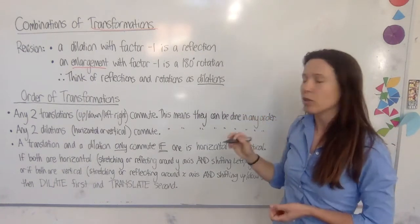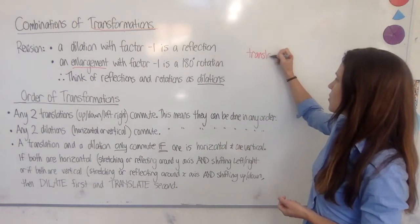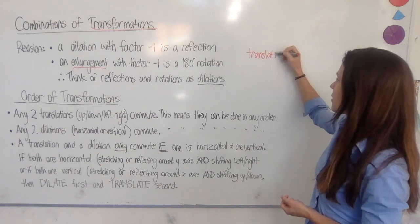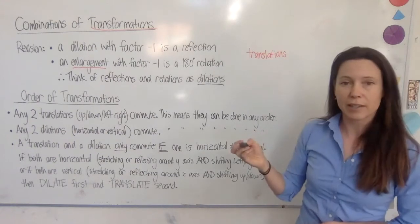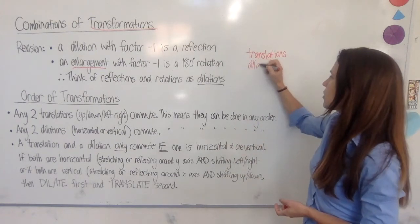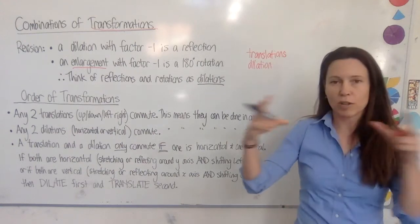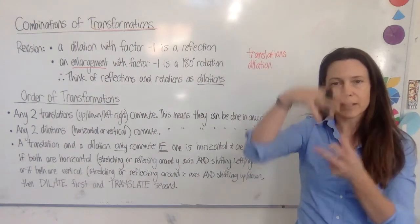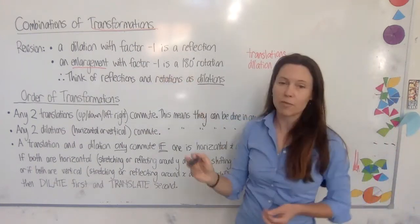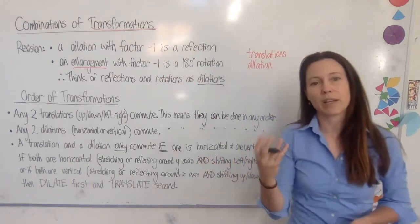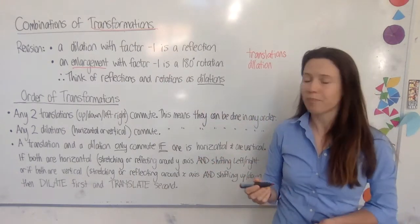So for today, when thinking about combinations of transformations, let's think of reflections and rotations as being dilations. That way we've only got two things to think about: translations — sliding things up, down, left or right — and dilations, which can be stretching or compressing in either direction, or with a factor of negative 1 can be a reflection or even a rotation.